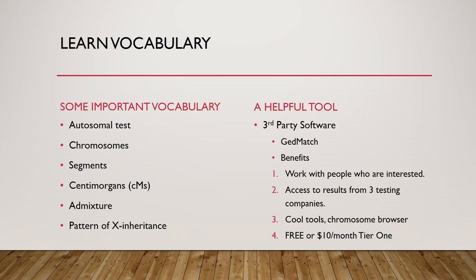There are some important vocabulary words to learn that have to do with DNA analysis. There are also some third-party software tools, GEDmatch being one of them. GEDmatch is great in terms of benefits — working with people who are interested in what you're interested in, so when you email them you're most likely going to hear back. You can also access results from all the different testing companies; MyHeritage is uploadable now and there are others. They have great tools on the free side, but also a $10 a month tier one membership with amazing pay tools, including the segment matching tool.